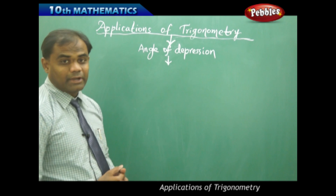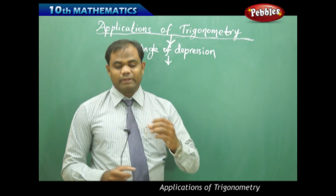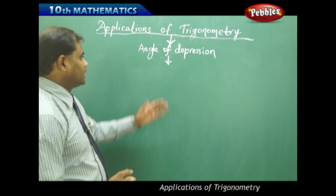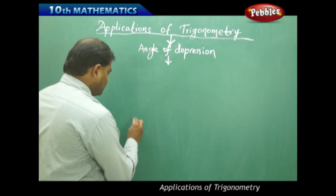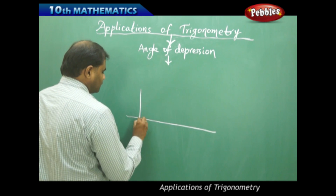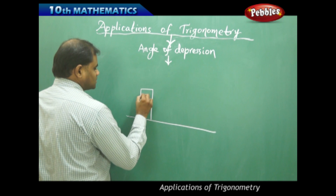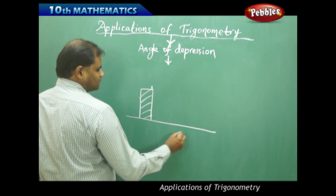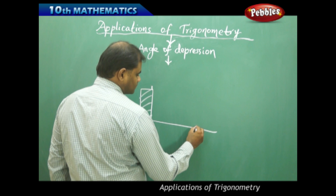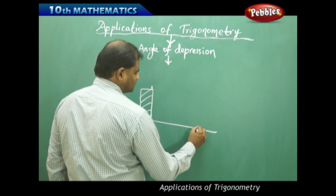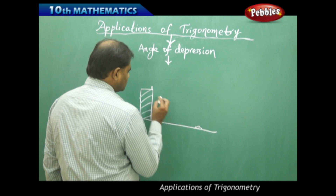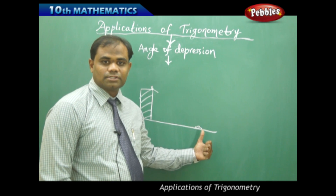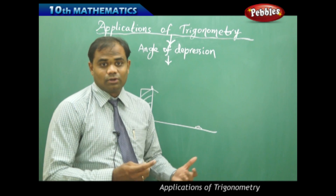Next is angle of depression. Angle of depression is when I see downwards, while angle of elevation is when I see upwards. For angle of depression, consider a real life problem where I am standing on top of a building and I want to see a car on the road below. Since I am on top of the building looking down at the car, that downward angle is called the angle of depression.